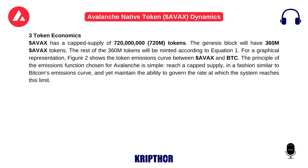Section 3: Token Economics. AVAX has a capped supply of 720 million tokens. The Genesis block will have 360 million AVAX tokens. The rest of the 360 million tokens will be minted according to equation 1. For a graphical representation, Figure 2 shows the token emissions curve between AVAX and BTC.